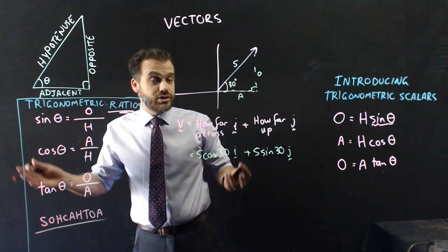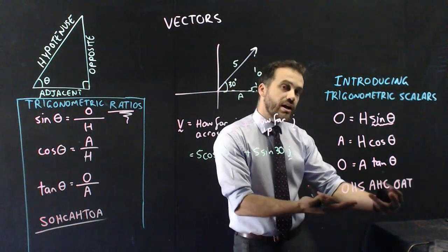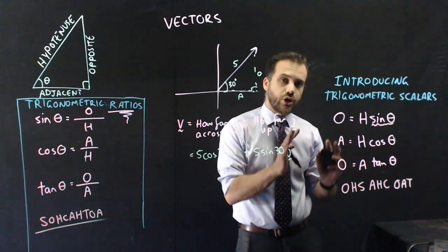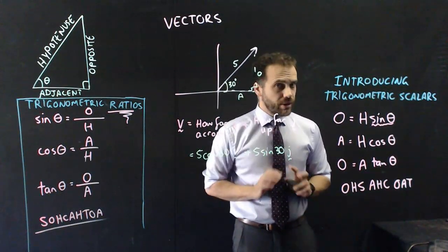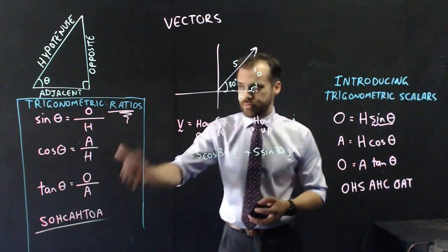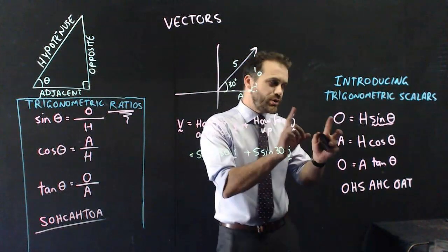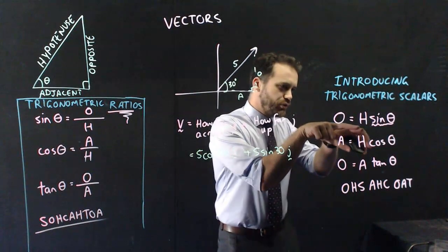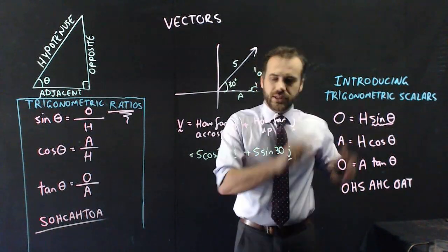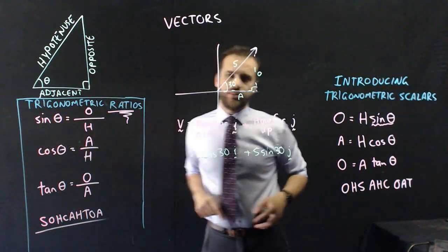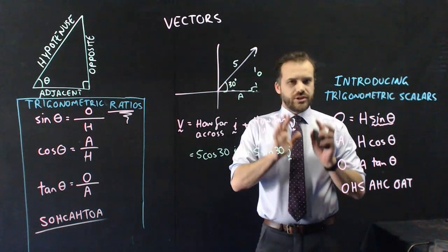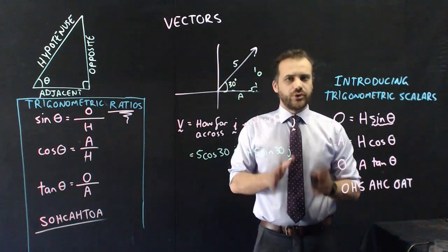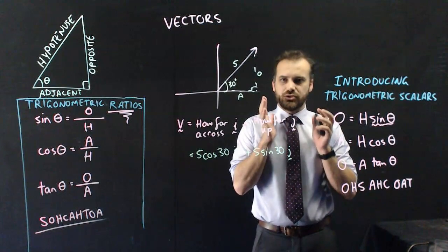Instead of learning SOH-CAH-TOA, learn OH-SAH-COT. So much more useful. This might be a hard thing to do because your teacher will keep talking about these, but you need to keep thinking about these. You'll know you're successful if you think of this formula instead of this formula. If you do that, you're setting yourself up for a beautiful future when it comes to trigonometry.